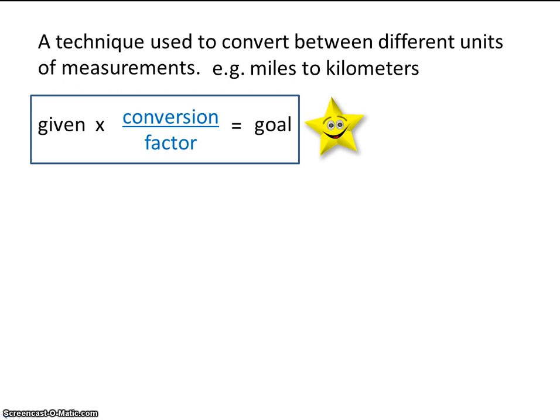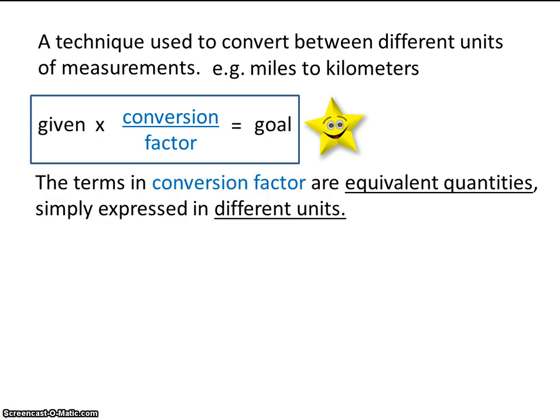I've placed a star by this to remind us that it's important. The terms in conversion factors are equivalent quantities simply expressed in different units. Once again, if you have a conversion factor, there will be equivalent quantities in different units. For example, one kilometer is equivalent to 1,000 meters. The only difference is they're expressed in different units, kilometers and meters, but these are equal to each other.